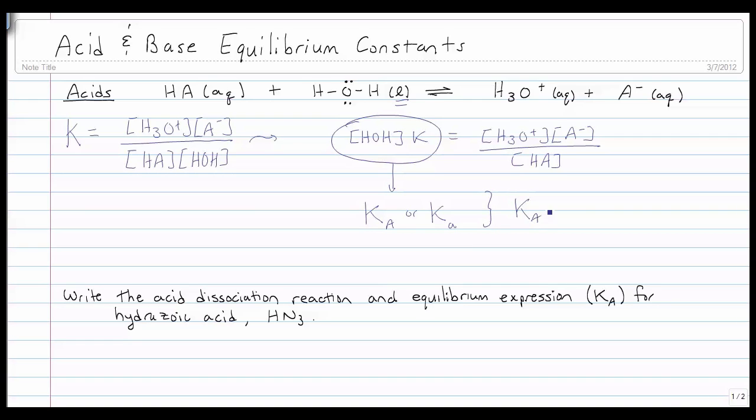But in the end it goes down to this. KA can be written by just taking a look at the aqueous portion of our acid dissociation reaction. So KA is equal to the hydronium ion, the anion left over from the acid, and the acid itself, all these concentrations. So right there is your acid dissociation.